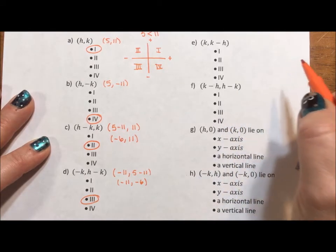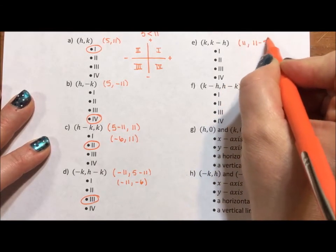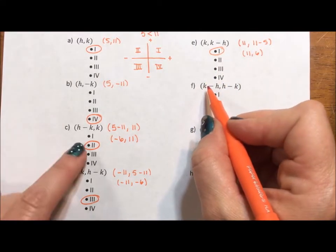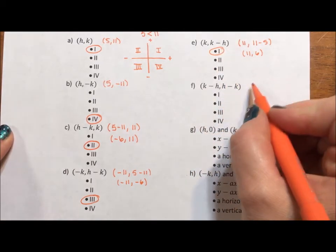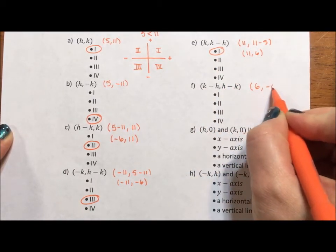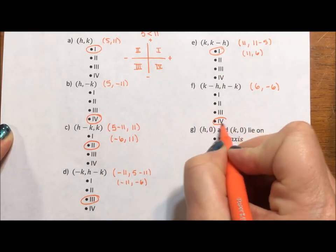All right, over here we have 11, comma 11 minus 5, that's 11, 6. It's going to be the first quadrant. Let's see, k minus h, we just did here, that's 6, h minus k, that's negative 6, comma 6, negative 6 is quadrant 4.